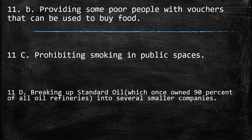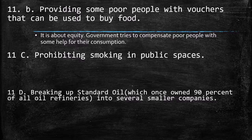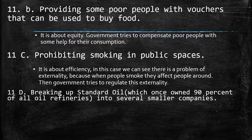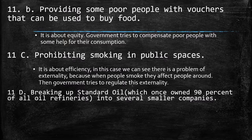Case B is providing poor people with vouchers that can be used to buy food. This is evidently equity, because the government tries to compensate poor people who don't have the purchasing power to buy these basic necessities. So I provide them with something in order for them to have some consumption. Case C — prohibiting smoking in public spaces — is more about efficiency. We're talking about negative externalities, because people who are smoking are affecting other people around them with smoke, and those people don't deserve receiving this pollution. So the government regulates by giving a tariff to smokers, disincentivizing smoking.